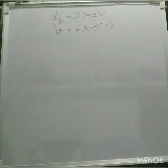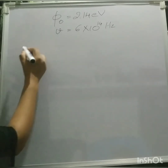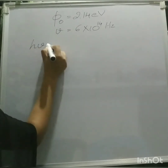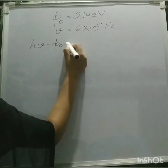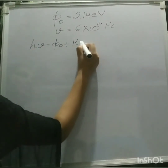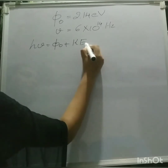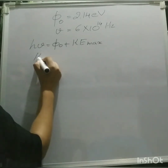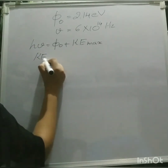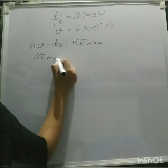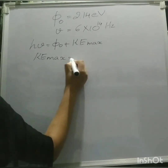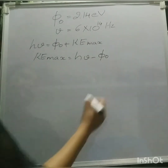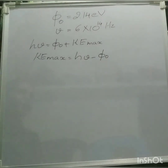From Einstein's photoelectric equation, hν is equal to Φ₀ plus kinetic energy maximum. From this, kinetic energy maximum is equal to hν minus Φ₀.